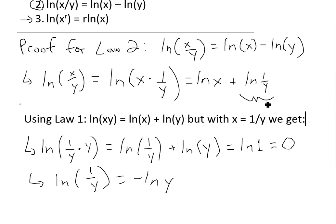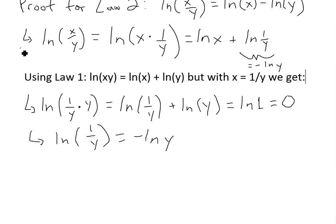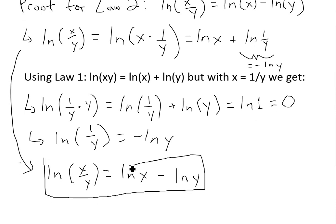So now we know that this part right here is equal to negative ln(y), and then basically I'll just write that down, equals negative ln(y), and now we've basically proven the theorem. And if we could plug this all in, we'll get ln(x/y) is equal to ln(x) and then minus ln(y). And this is basically the proof for law 2.